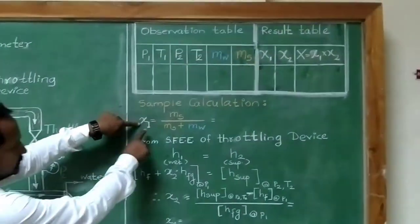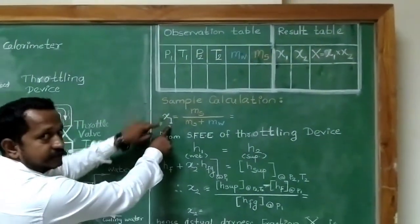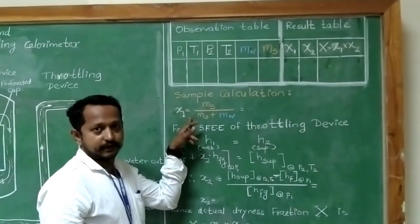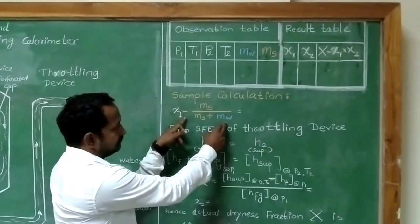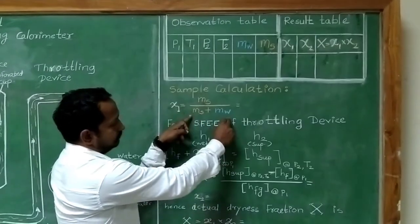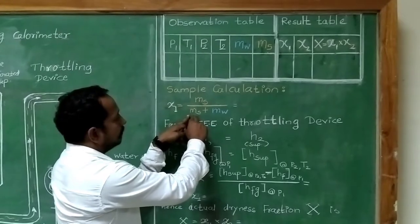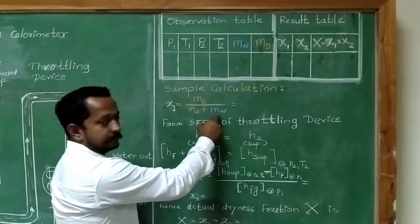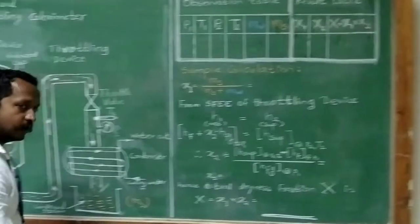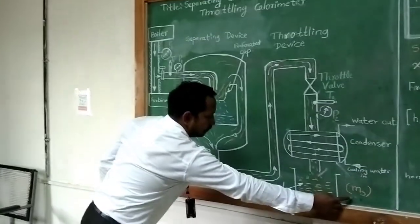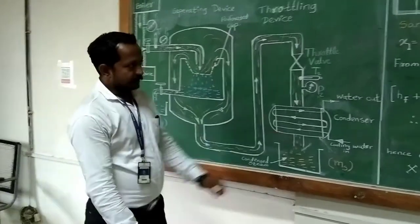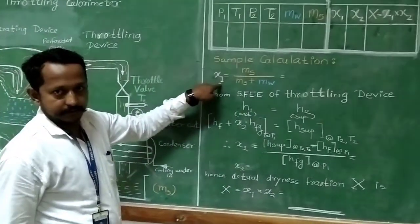Now, let us see: x1 is nothing but the dryness fraction found out using the separating calorimeter. It has a very simple formula — mass of dry steam divided by mass of total steam, which is nothing but mass of dry steam plus mass of water. So, all these values, Ms and Mw, are already found out — here is Ms, there is Mw. So, we can find the value of x1.